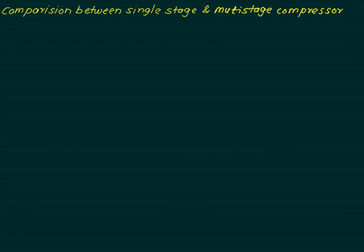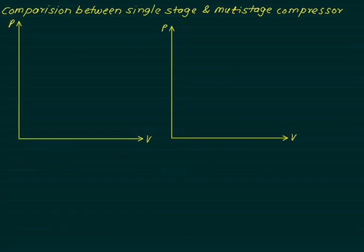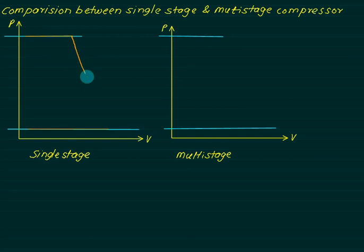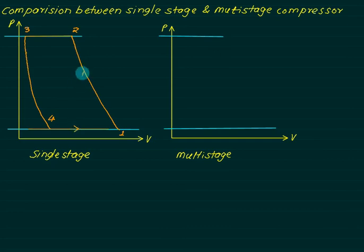We compare the single-stage and multi-stage compressor for various characteristics using two PV diagrams. The suction pressure equals P1 and delivery pressure is the same for both compressors. One to two is a polytropic compression for single stage, following the law P·V^n = constant. Expansion also follows the same law P·V^n = constant.